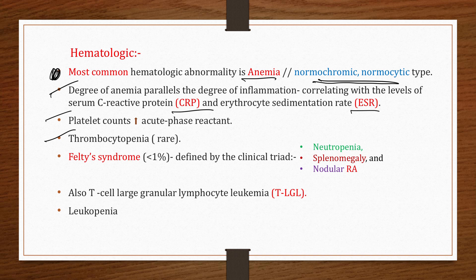Felty's syndrome occurs in less than 1% of RA patients and is defined by the clinical triad of neutropenia, splenomegaly, and nodular rheumatoid arthritis. T-cell large granular lymphocyte leukemia (T-LGL) and leukopenia may also occur in RA patients.